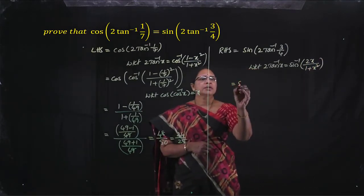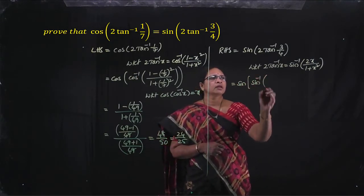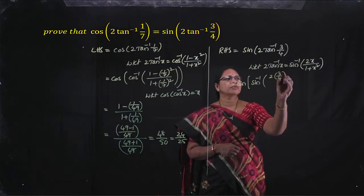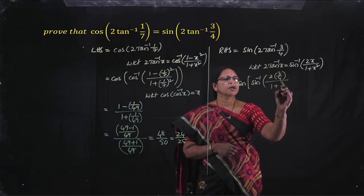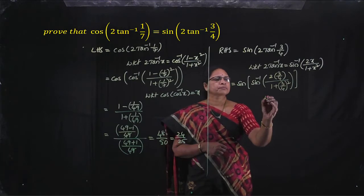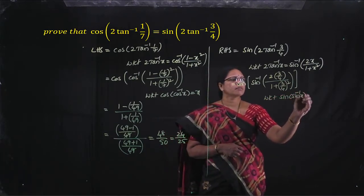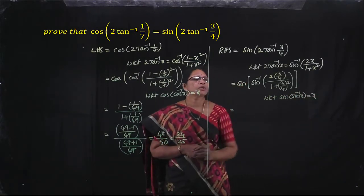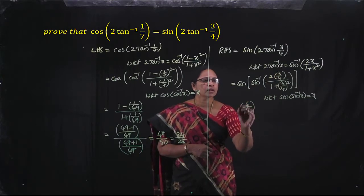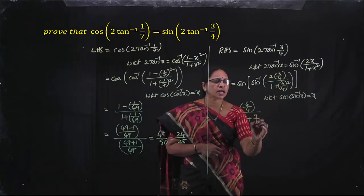Apply this formula. We get sin of sin inverse of 2x by 1 plus x square, that is 2 into 3 by 4 by 1 plus 3 by 4 whole square. We know sin of sin inverse x is x, so that is equal to 2 into 3 by 4, that is 6 by 4, divided by 1 plus 9 by 16.